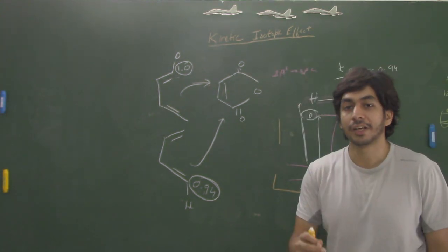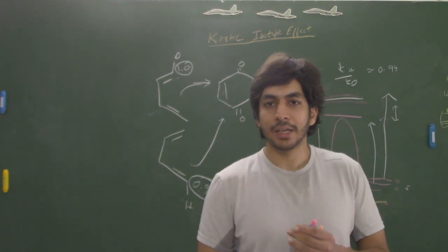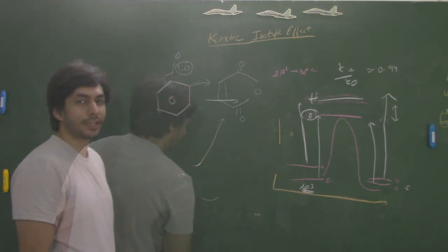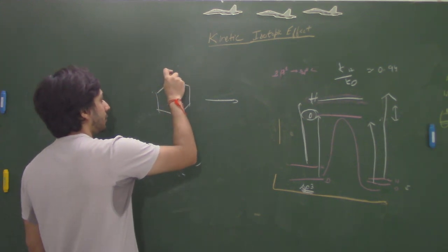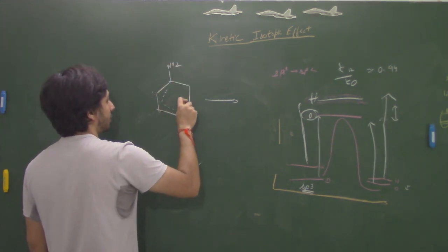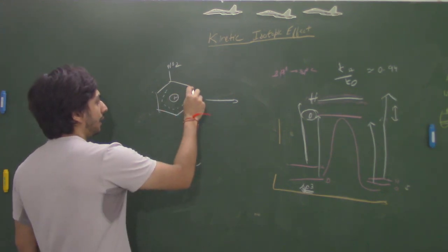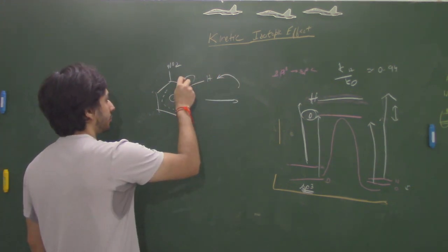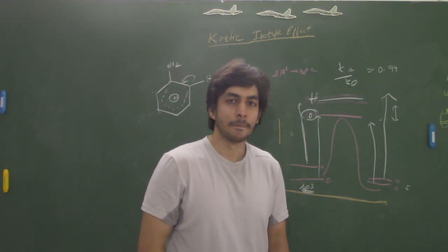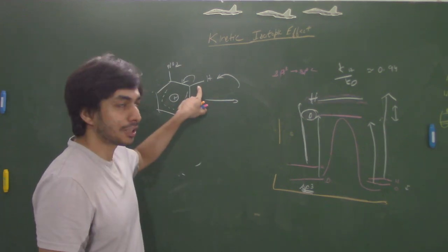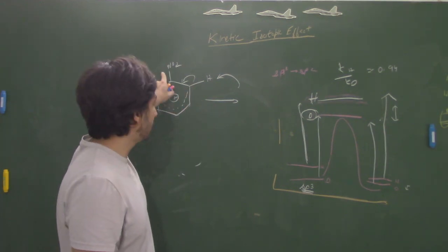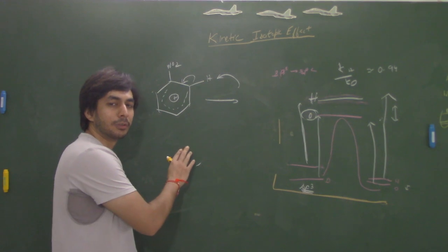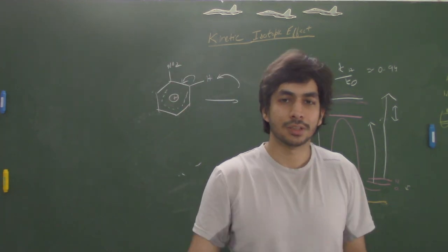One small example: electrophilic aromatic substitution. If you look at the mechanism, first the electrophile attaches, creating a positive charge that is distributed, and then the next step is abstraction of the proton by a conjugate base, leading to re-aromatization. The rate-determining step is not the abstraction of hydrogen, but the addition of the electrophile. So the KH by KD values will be roughly equal to 1 — no kinetic isotopic effect will be observed for this electrophilic aromatic substitution. This is one way to determine the mechanism of a reaction.